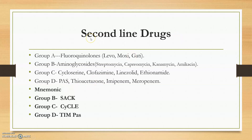The second-line drugs have high toxicity and low efficacy. Group A are fluoroquinolones. Group B are aminoglycosides — streptomycin, capreomycin, kanamycin, amikacin — the main aminoglycosides used. Group C includes cycloserine, clofazimine, linezolid, and ethionamide.